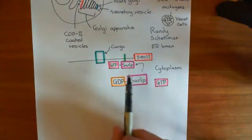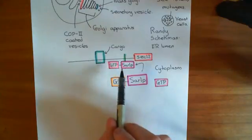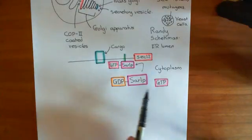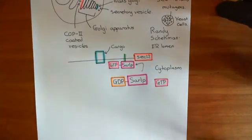So so far what we've done is we've activated this SAR 1p protein by taking off the GDP and binding guanosine triphosphate to it instead, and that feat was achieved by this sec-12 protein, which is in the membrane of the endoplasmic reticulum.